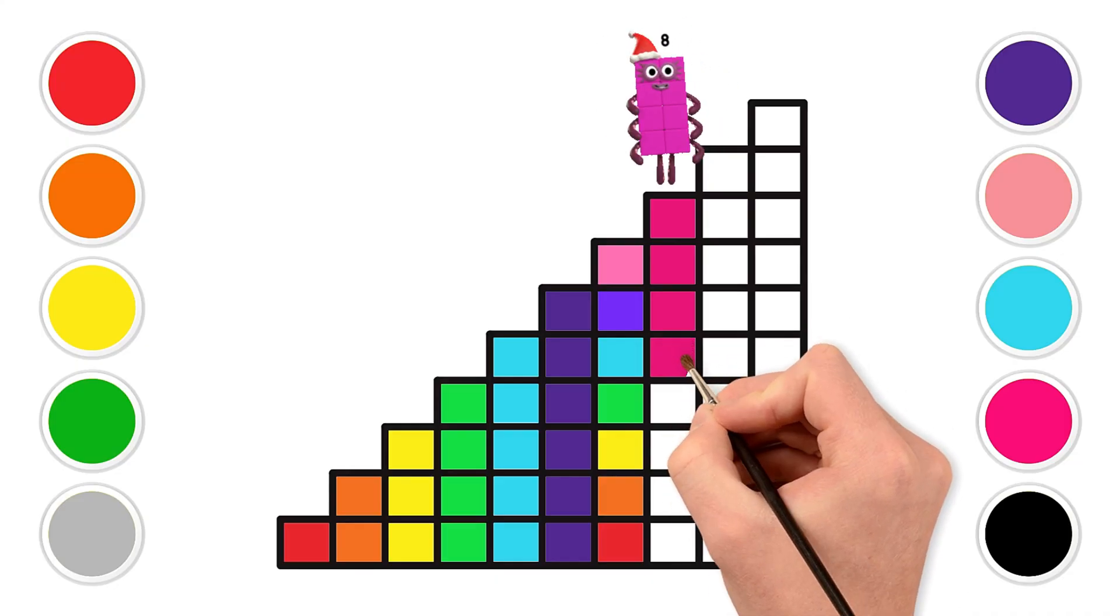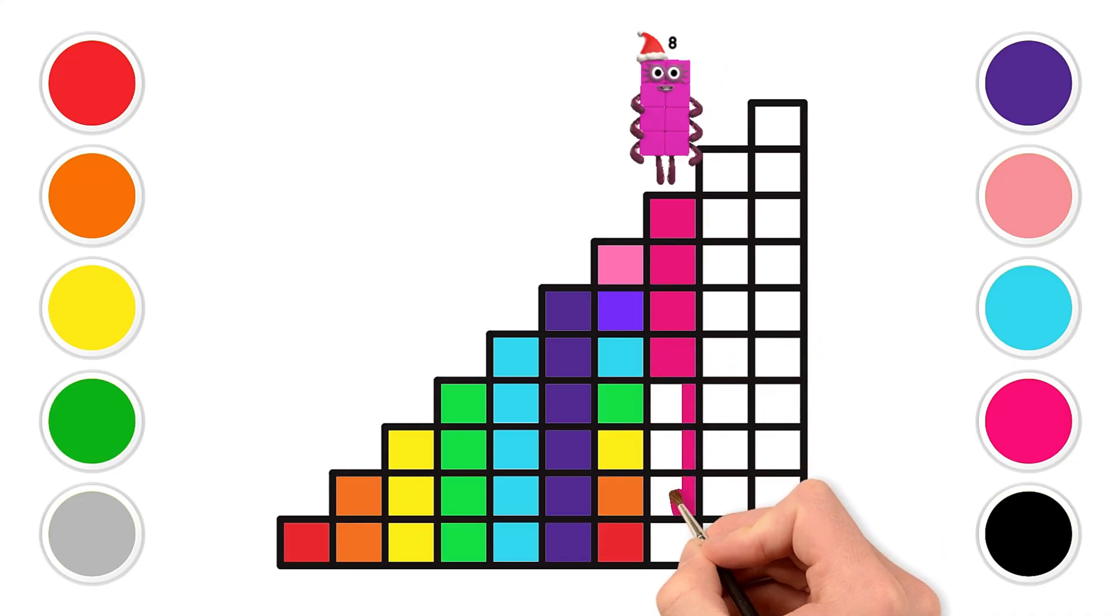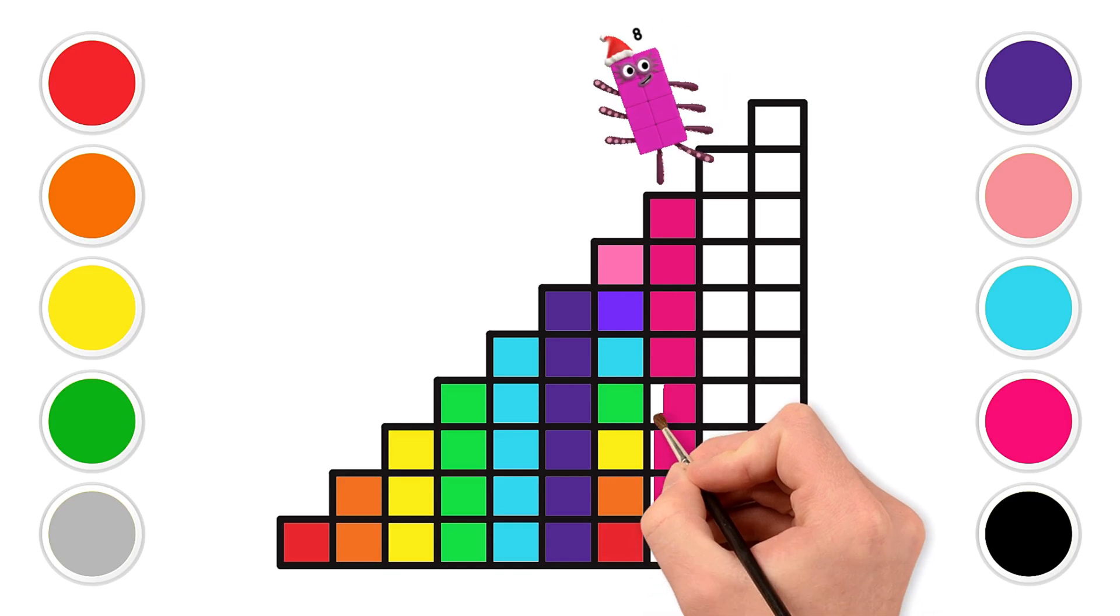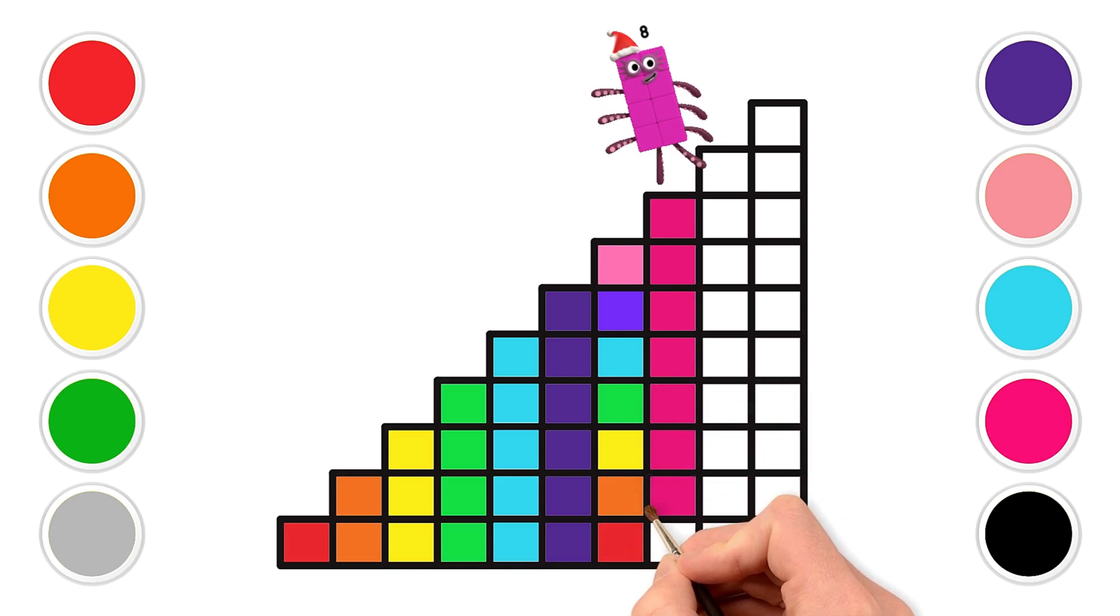Eight purple grapes are hanging on a vine so tall. One, two, three, four, five, six, seven, eight, we want to catch them all. And nine red yummy apples in a basket deep and wide. One, two, three, four, five, six, seven, eight, nine, we're happy feelings high.